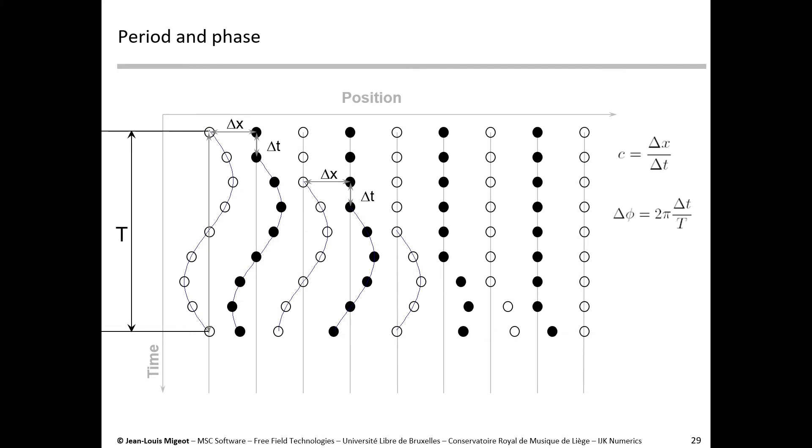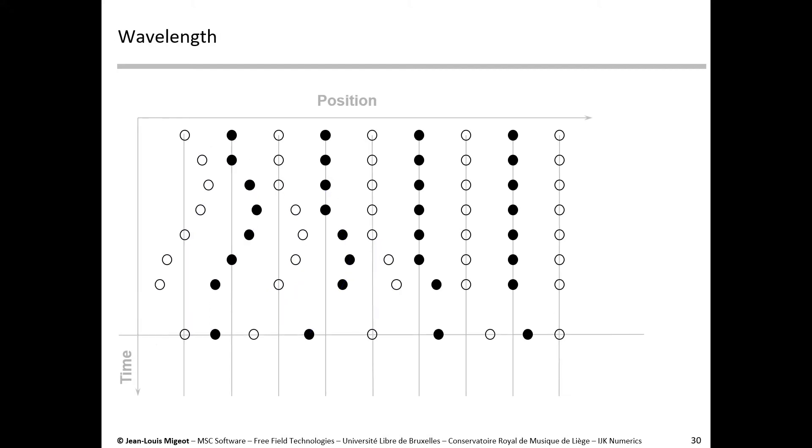Instead of looking at the position of the different individual molecules over time, we may look at the position of all the molecules at one given time. But because the movement is horizontal, this is not very practical. So we're going to try to represent the horizontal movement on a vertical scale. And if you do that, you see that at any given instance, the horizontal movement of the particle is also distributed sinusoidally.